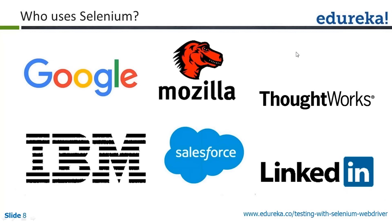Who uses Selenium? As of today, all the major market giants in the IT industry are using Selenium — for example, Google, Mozilla, ThoughtWorks, IBM, Salesforce, and LinkedIn are all using Selenium for automation.